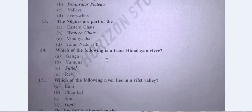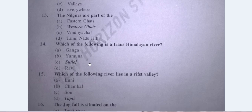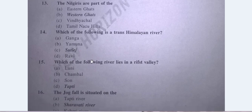Question No. 14: Which of the following is a Trans-Himalayan River? The answer is Sutlej — answer is C, Sutlej.